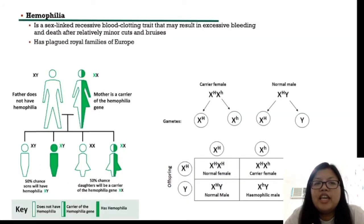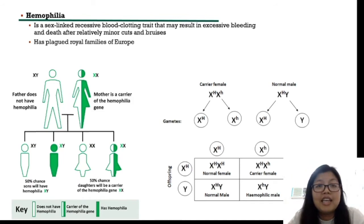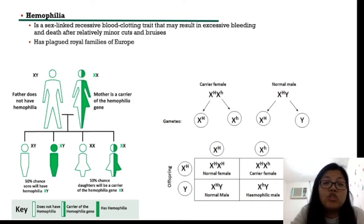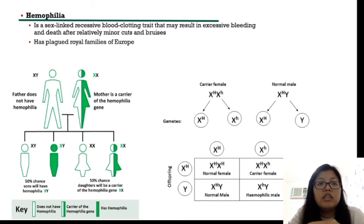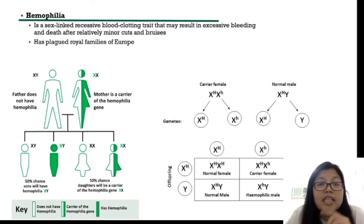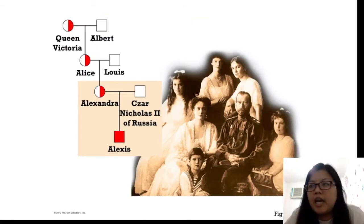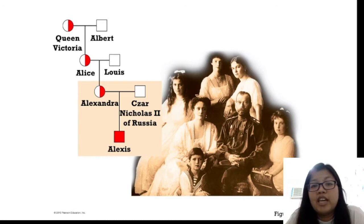Next, hemophilia. Hemophilia is a sex-linked recessive blood clotting disorder that may result in excessive bleeding and death after relatively minor cuts and bruises. When you are wounded, the blood does not clot, so bleeding continues and it can cause death. This is very well-known because it plagued the royal families of Europe. One of the most famous families affected by hemophilia is the family of Tsar Nicholas II of Russia, the last monarch of Russia.